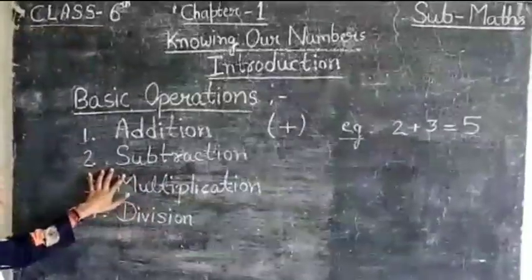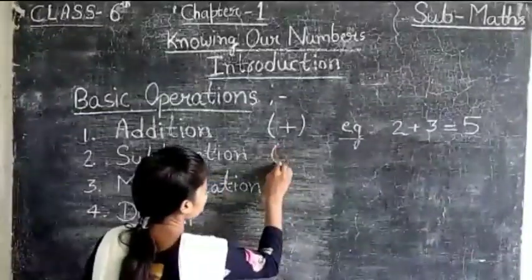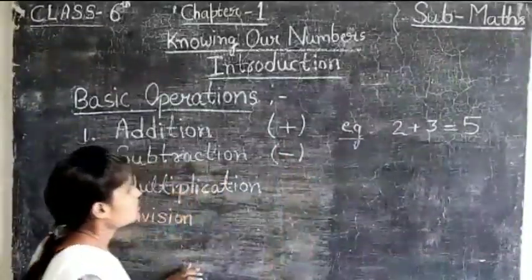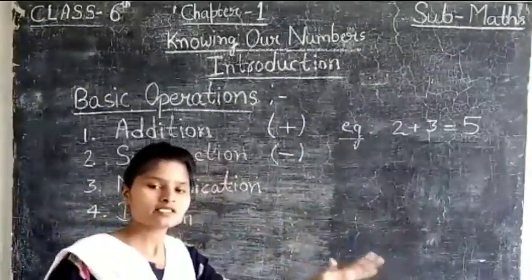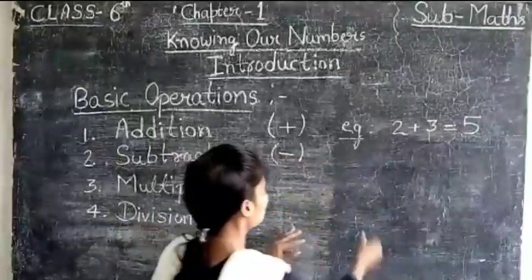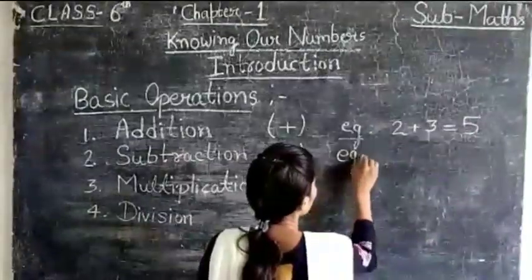Now next is subtraction. And the symbol of subtraction is minus. That means ghatana, ek digit ko dusre digit se subtract karna. The subtraction of one digit from another digit.